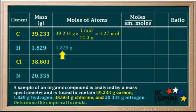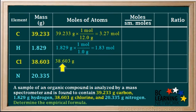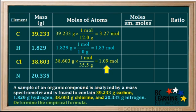We do a similar calculation for hydrogen. We take 1.829 grams and multiply by the conversion factor 1 mole of H atoms per 1 gram. It's important to remember we use the atomic mass of H, not the molar mass of H2 here. When calculating moles of atoms, we always use atomic mass. The atomic mass of hydrogen is 1.0 grams per mole, giving us 1.83 moles of hydrogen atoms. For chlorine, we take 38.603 grams, and since the atomic mass of chlorine is 35.5, we multiply by 1 mole per 35.5 grams, getting 1.09 moles of chlorine atoms.